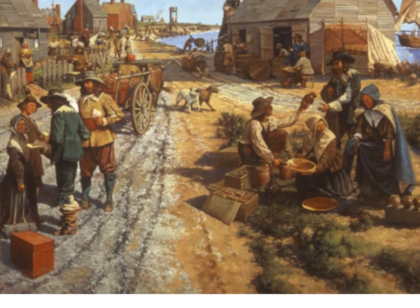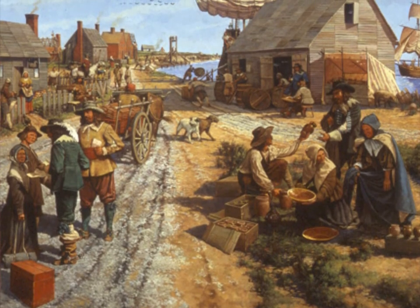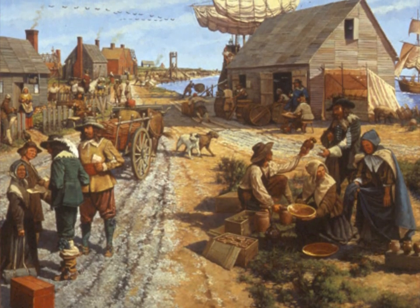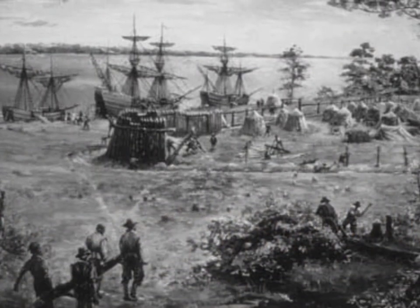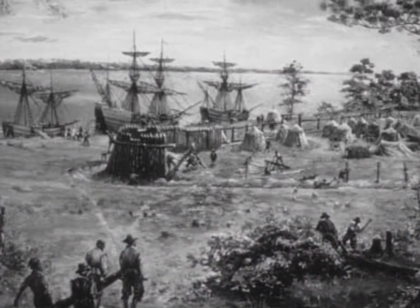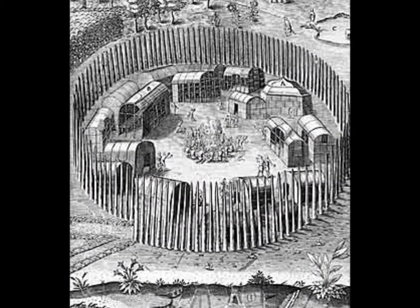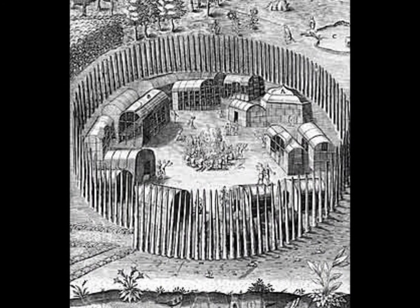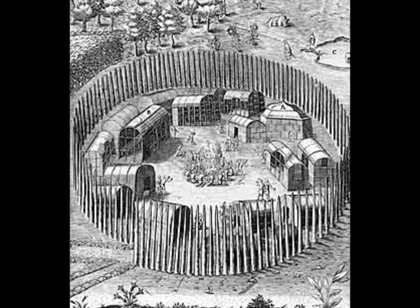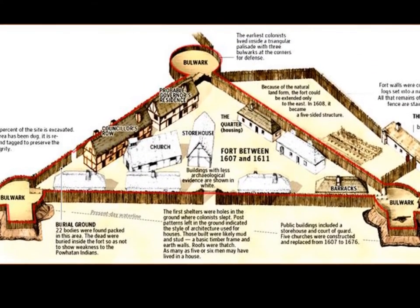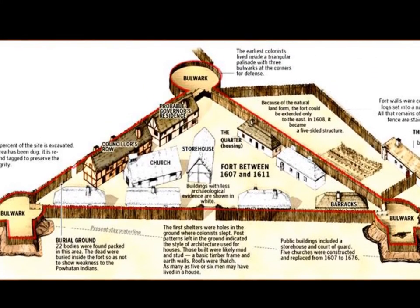Jamestown was not named the first colony because Roanoke was settled before Jamestown in 1588. In 1607, Jamestown was settled by a group of men under the lead of Captain Christopher Newport. The colonization almost failed during the first year due to lack of food, lazy men who only wanted to search for gold, fear of the natives, a fire that destroyed the food supply, and mosquitoes that carried diseases.